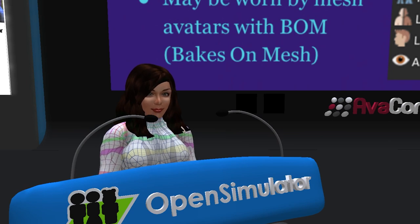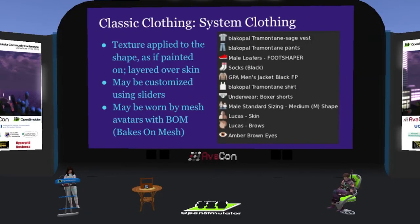System clothing has the following characteristics. The texture is applied to the shape as if painted on, layered over the skin. It may be customized using sliders. It may be worn by mesh avatars with bakes on mesh. It has extremely low complexity. The icons on the right of this slide, except for the alpha layer, show system items in your inventory. If you filter it to show only clothing, these will be the only things that show up.